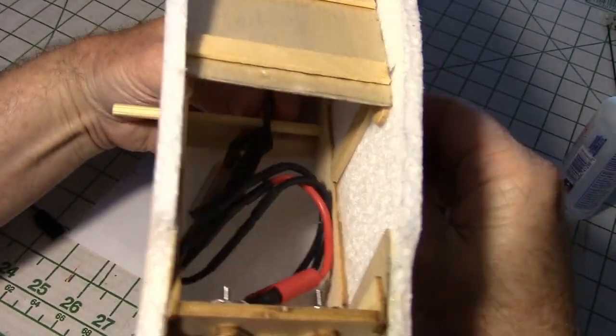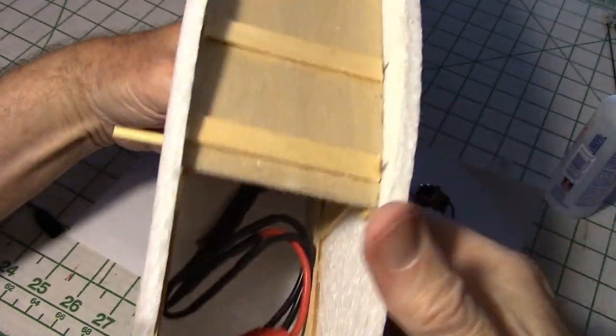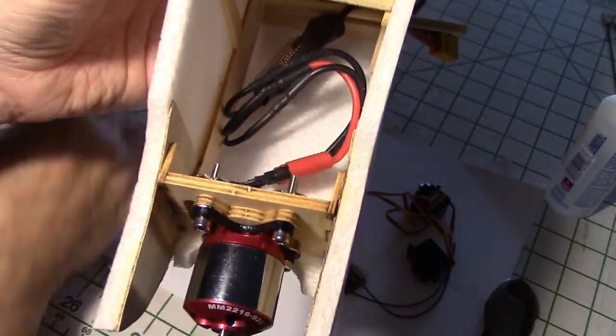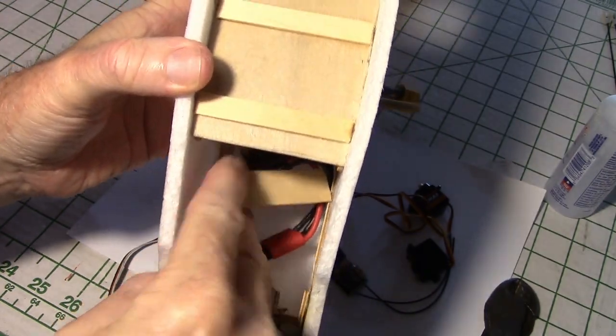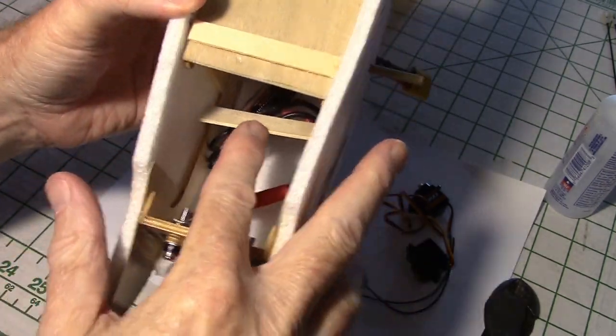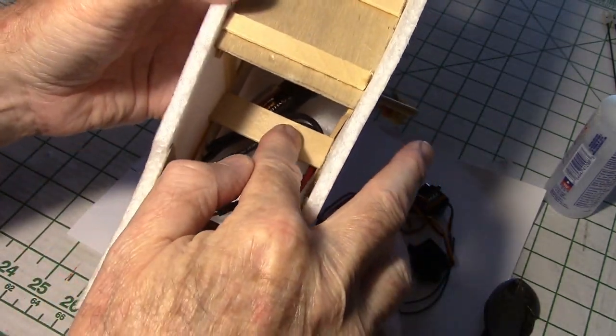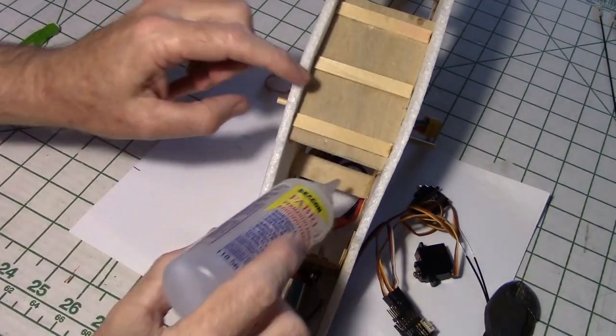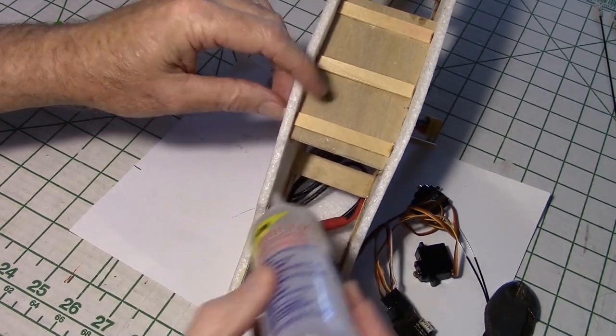I used the dowel to hold the ESC in place by running it through the wires. That's the dowel that holds the rubber bands onto the wing. Then I inserted a tongue depressor piece to hold the wires from flopping out. I glued it in with some foam tack and let it dry.